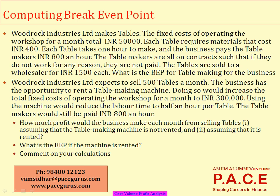Now for the second part of the case: the same company expects to sell 500 tables a month — no issues at all, since the break-even point is only 167 tables. But the business has the opportunity to rent a table-making machine, which would increase the total fixed costs of operating the workshop for a month to 300,000.